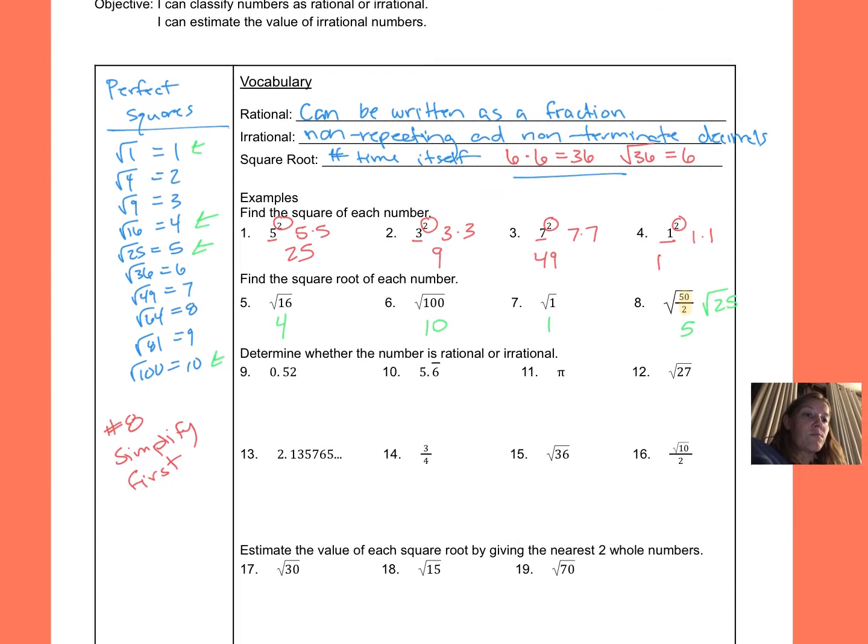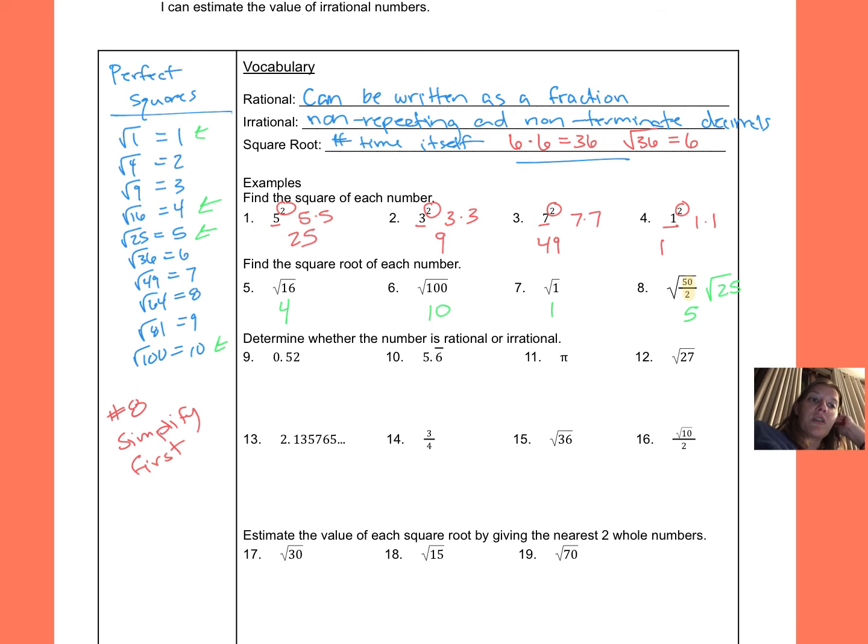The next set, we're going to determine if these are rational or irrational. So the only ones that are going to be irrational is if it is a decimal that keeps on going and never stops, and it also has no pattern to it as it goes on. Everything else is going to be rational. So number 9, 0.52, and that's it, nothing else. So that is rational, it's a terminating decimal. Number 10, this line here means it repeats. So that means the 6 keeps repeating over and over and over again forever. So that makes it a repeating decimal, which is rational.